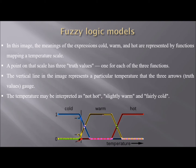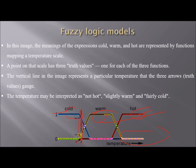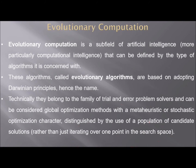In this image, the meaning of the expressions cold, warm, and hot are represented by a certain mapping function at some temperature scale. Each point on the scale has three truth values, one for each of the three functions: cold, warm, and hot. The vertical line in the image represents a particular temperature — any temperature can be interpreted as not hot, maybe slightly warm, or fairly cold. This is how the fuzzy logic model represents values between 0 and 1.